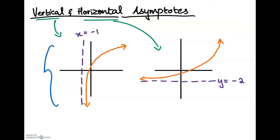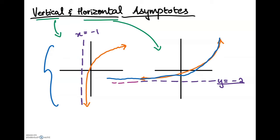The same goes for the horizontal asymptote. The only difference between vertical and horizontal is that vertical is a straight line from top to bottom, so it's normally the equation of an x value. A horizontal asymptote is horizontal, so it's normally the equation of a y value, as you can see here. The graph will come all the way down and continue on and on, and the horizontal asymptote will also continue on and on, but they will never touch.